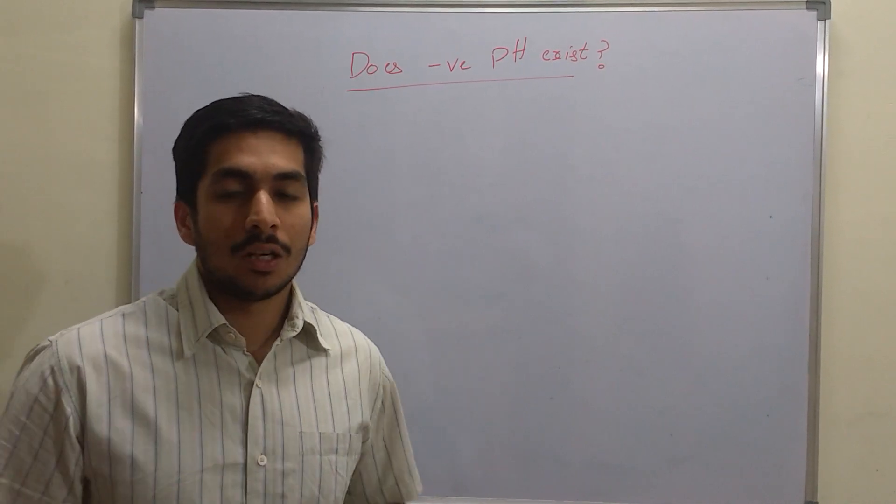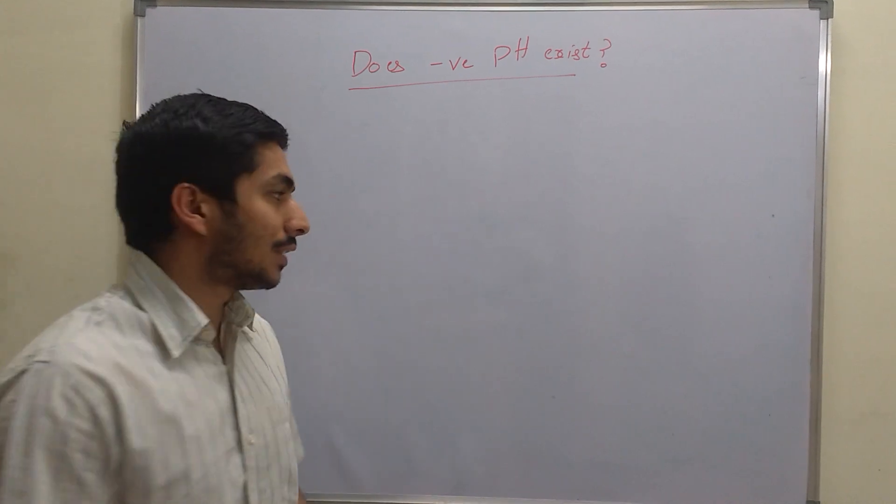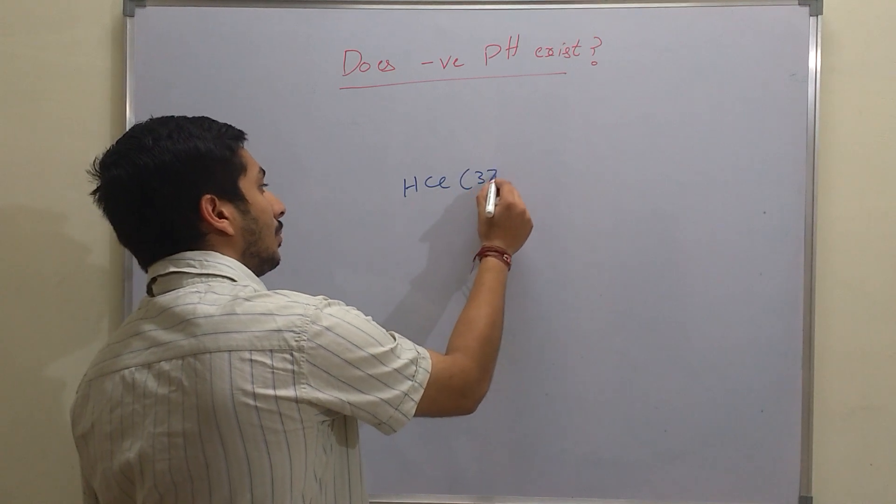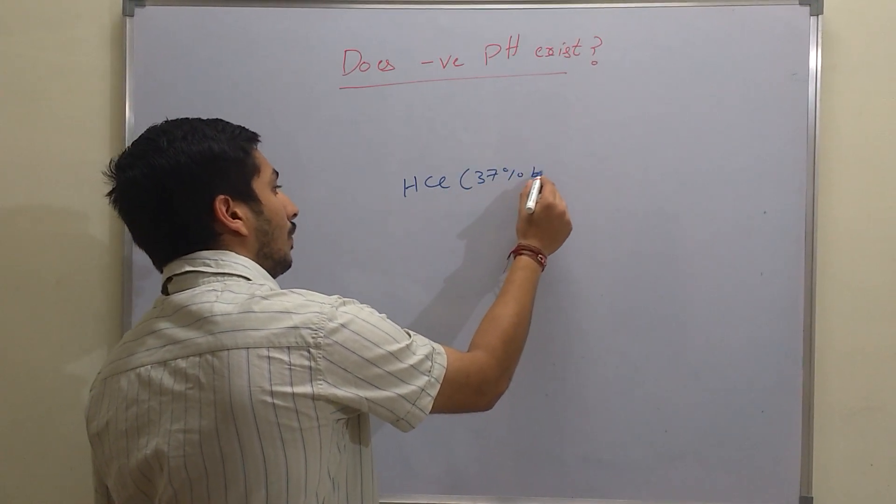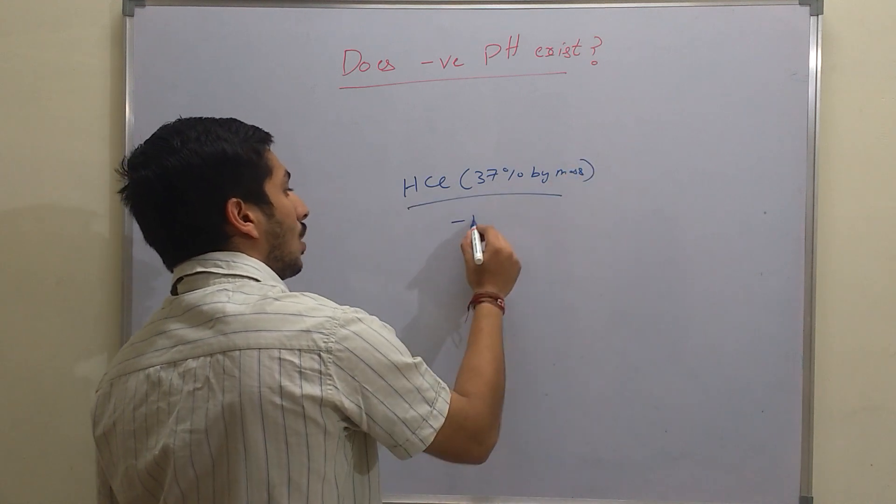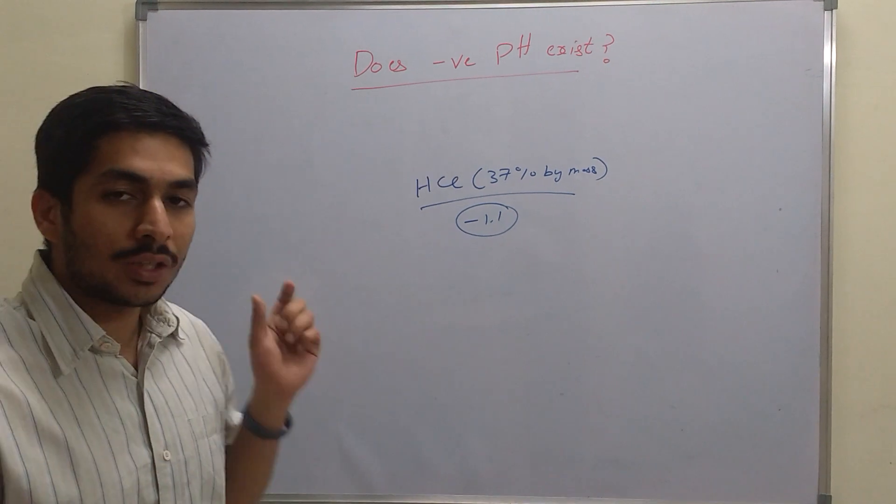Experimentally, if I tell you, commercially available HCl solution - there is an HCl 37% by mass solution - has a pH of minus 1.1. It has a negative pH.